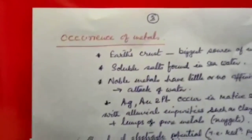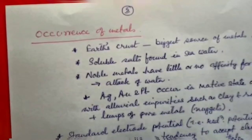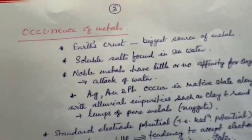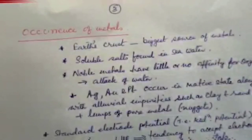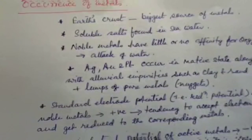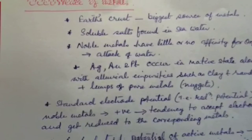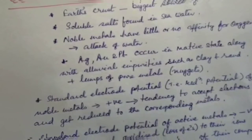Occurrence of metals: metals occur in nature sometimes free but mostly in the combined state. The Earth's crust is the biggest source of metals. Some soluble salts of metals are found in seawater. Noble metals, which have little or no affinity for oxygen and resist the attack of water and other chemical reagents, occur in the free — that is, native — state. Metals such as silver, gold, and platinum occur in the native state along with alluvial impurities such as clay and sand. Sometimes lumps of these metals are also found; these are called nuggets.